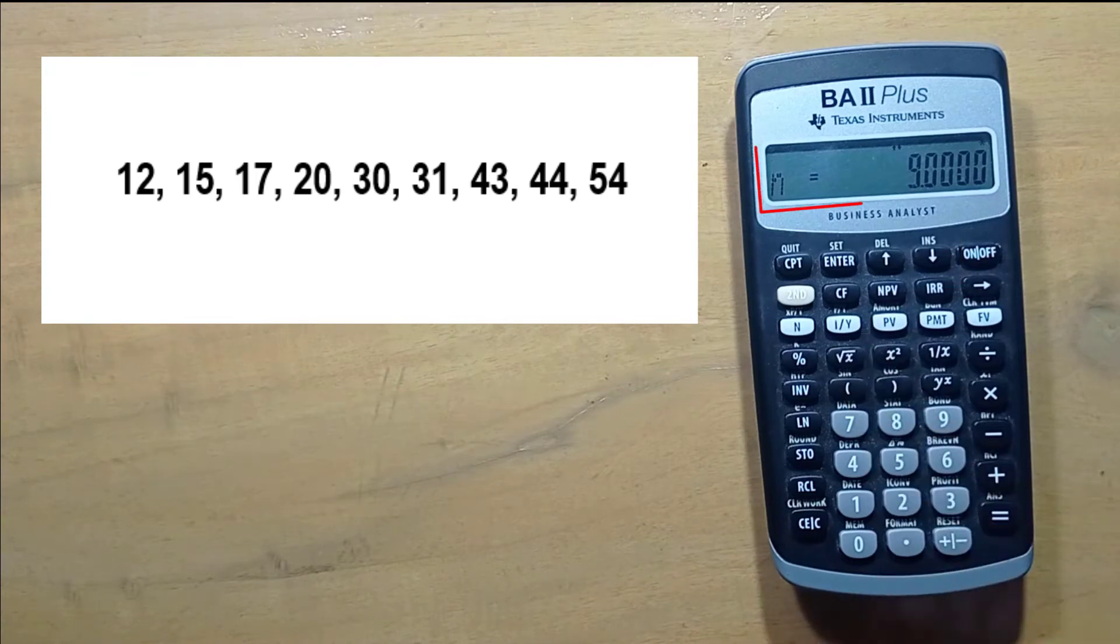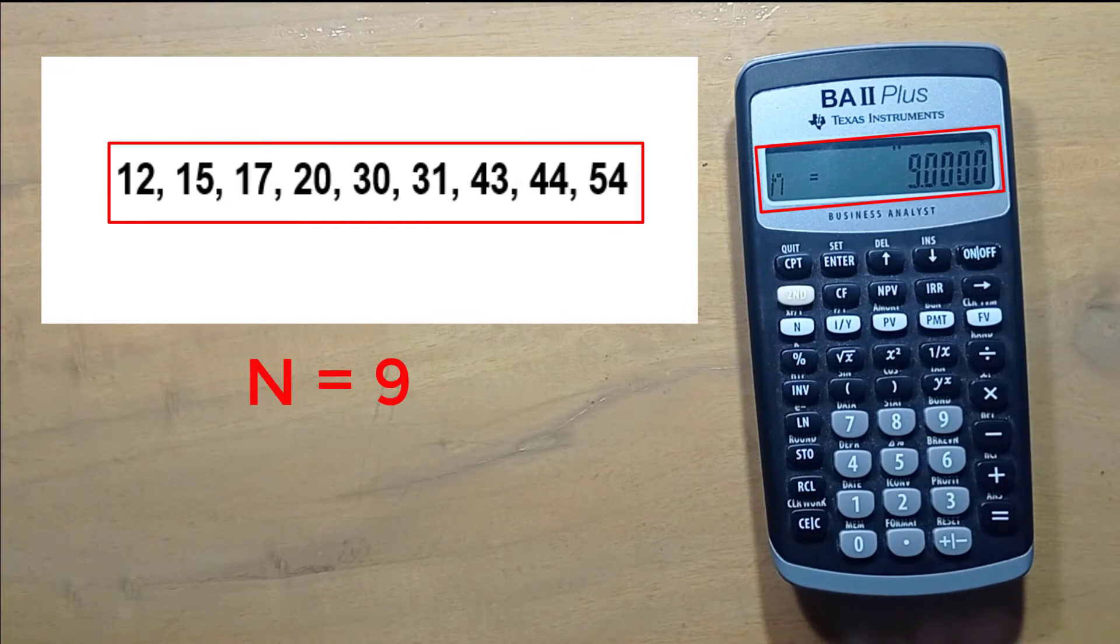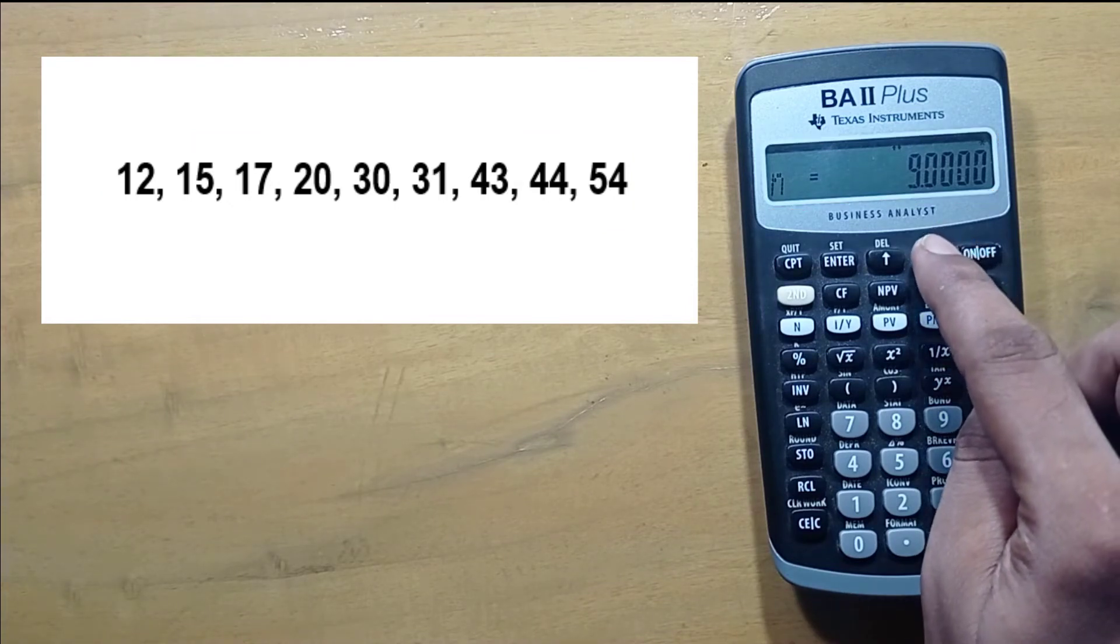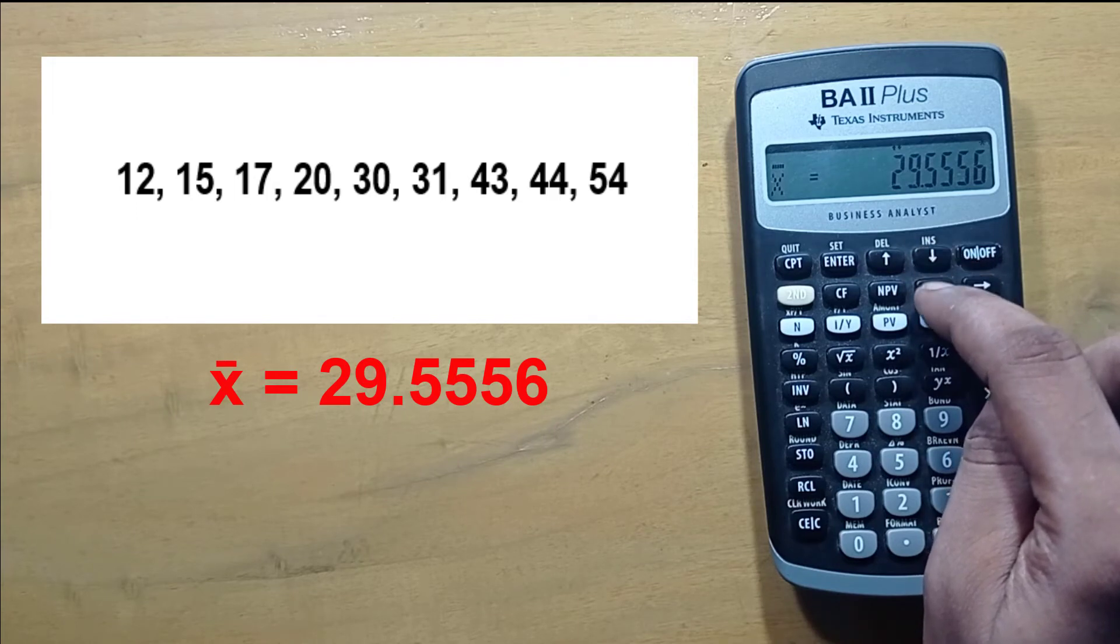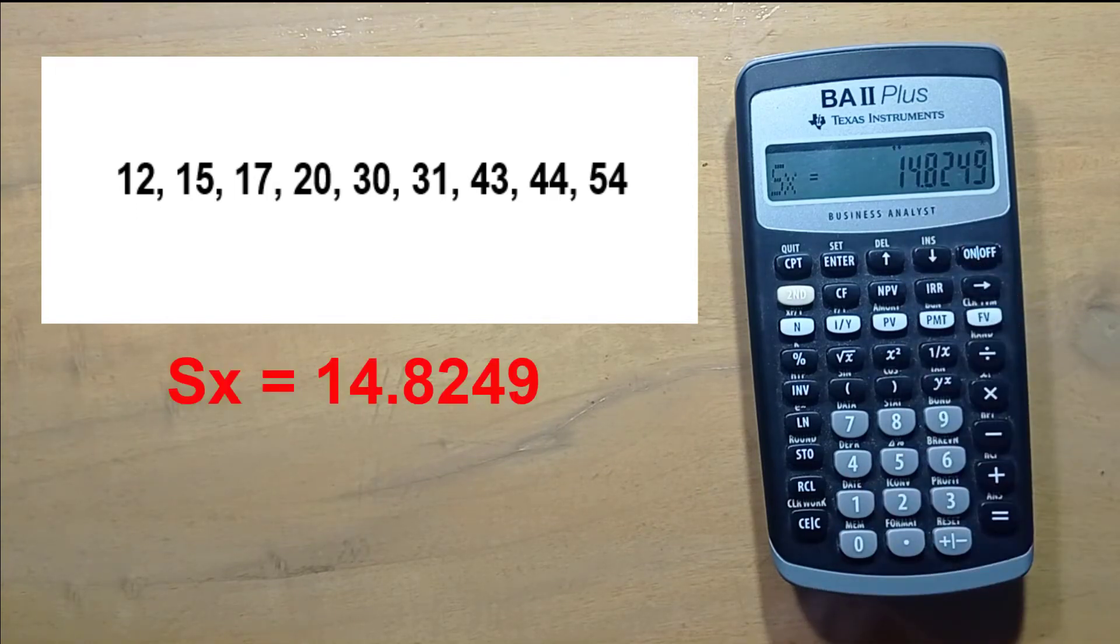It is showing n equal to 9 as we have entered 9 values. Press down arrow. Here x bar is the sample mean, which is 29.5556. This is standard deviation for this sample, 14.8249. This calculator does not provide population or sample variance directly.